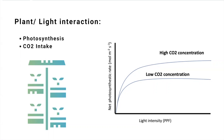If we increase the intake of CO2 by the plant because we increase the CO2 concentration in the environment, then we can also improve photosynthesis. This is why CO2 injection can be used in greenhouses and indoor facilities. But remember, it's not only about adding more CO2 — you always need to take into consideration the light intensity to optimize your growth performance based on the interaction of light with CO2 intake and photosynthesis.